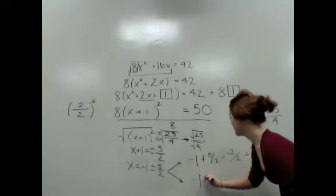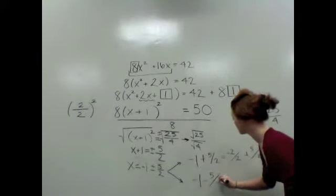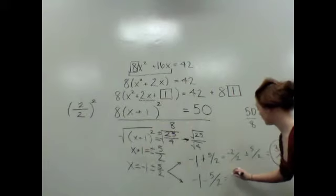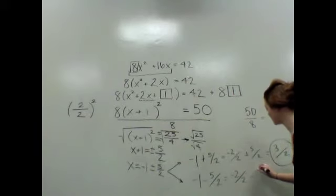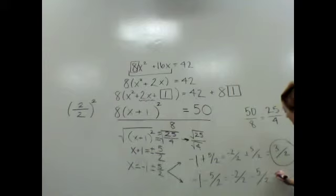We also have -1 - 5/2. So we have -2/2, so we really have -7/2.